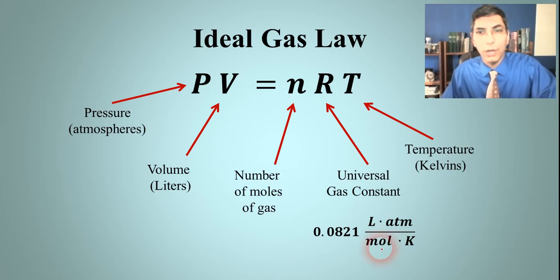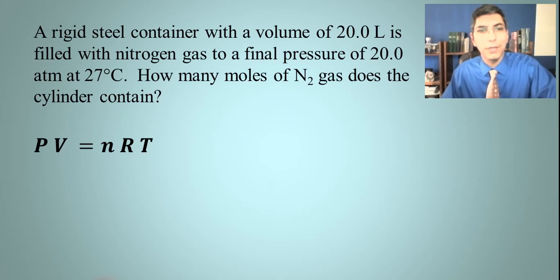Let's try some examples. The first example: a rigid steel container with a volume of 20 liters is filled with nitrogen gas to a final pressure of 20 atmospheres at 27 degrees Celsius. How many moles of nitrogen gas does the cylinder contain?